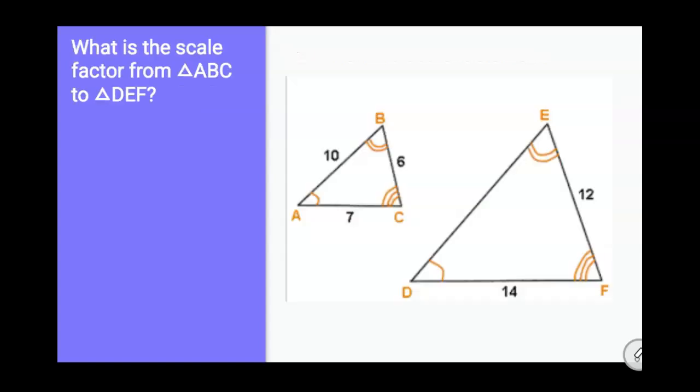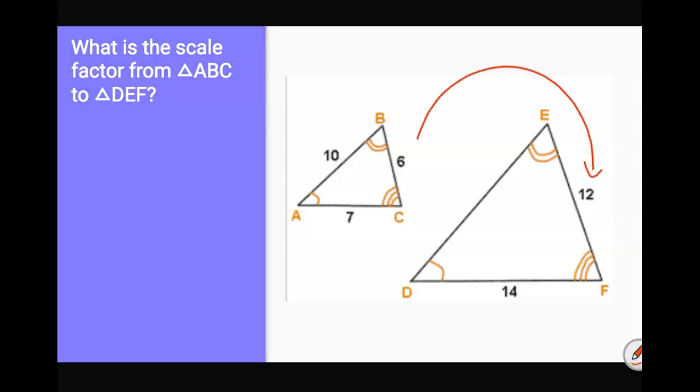So I want you to practice finding exact scale factors. If I asked you here, what's the scale factor from triangle ABC to triangle DEF? Most of you, I think, would intuitively tell me that the scale factor is two, because you can multiply six by two to get 12. However, if you get more complicated numbers and it's not obvious to you, you can take the corresponding side lengths and divide them. So in this case, 12 divided by six is two.